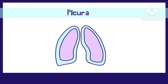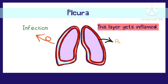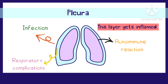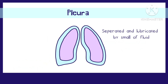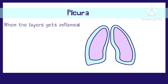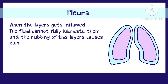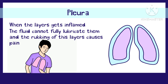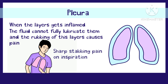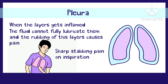This layer gets inflamed due to infection, autoimmune reaction, or as a complication of a respiratory tract disorder. Both these layers are separated and lubricated by a small amount of pleural fluid which acts like a cushion to the lungs. But when both of these layers inflame, the fluid cannot fully lubricate them and the rubbing of both layers — especially during breathing in — causes sharp stabbing pain. This pain is also termed as pleuritic pain.